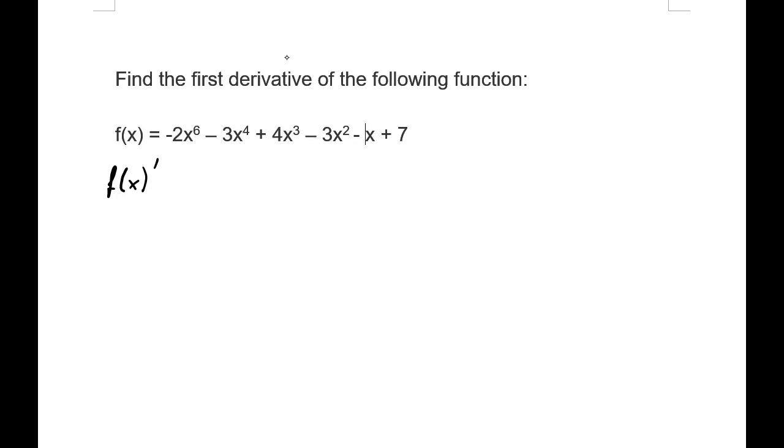So how do we do that? The most important thing to bear in mind is the rule for how we deal with exponents when it comes to first derivatives. If we've got x to the power of n as our function, then the first derivative would be n times x to the power of n minus 1.